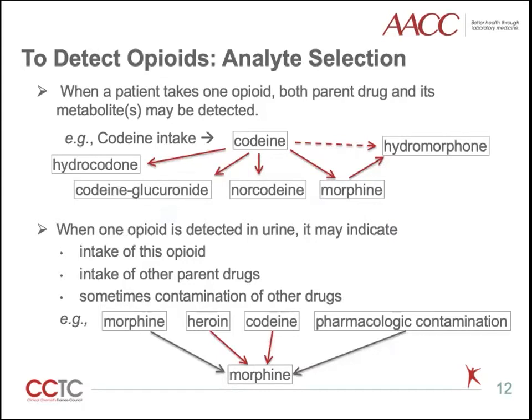For example, intake of codeine leads to the detection of codeine, the parent drug, and its metabolites, including norcodeine, codeine glucuronide, hydrocodone, morphine, and hydromorphone.